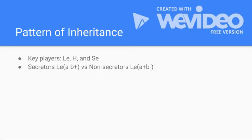In the previous slides, I went over how the Lewis antigen structures are formed, and it should come as no surprise that the three key players responsible for their expression, both in secretions and on the red cells, are the Lewis, H, and secretor genes.